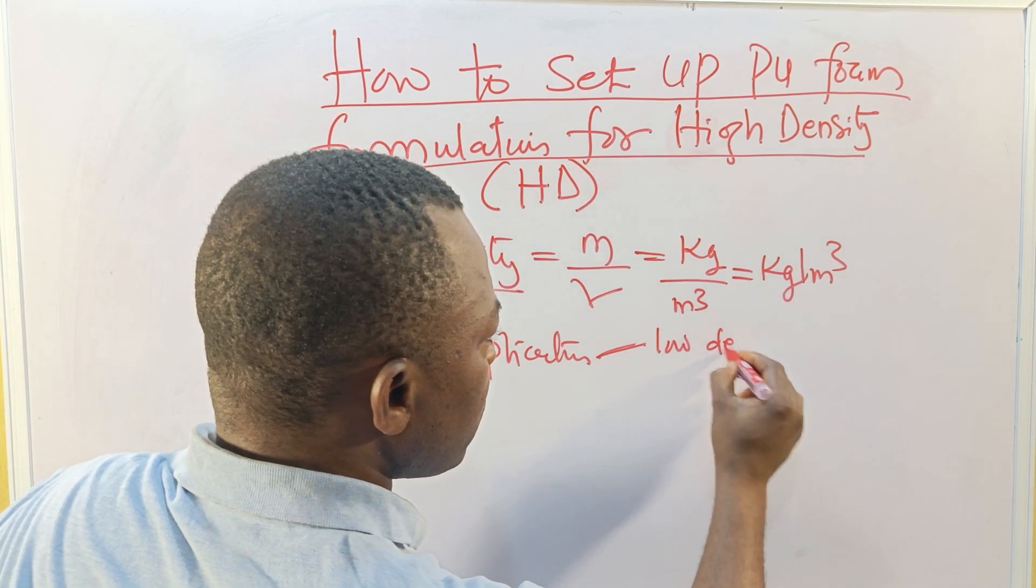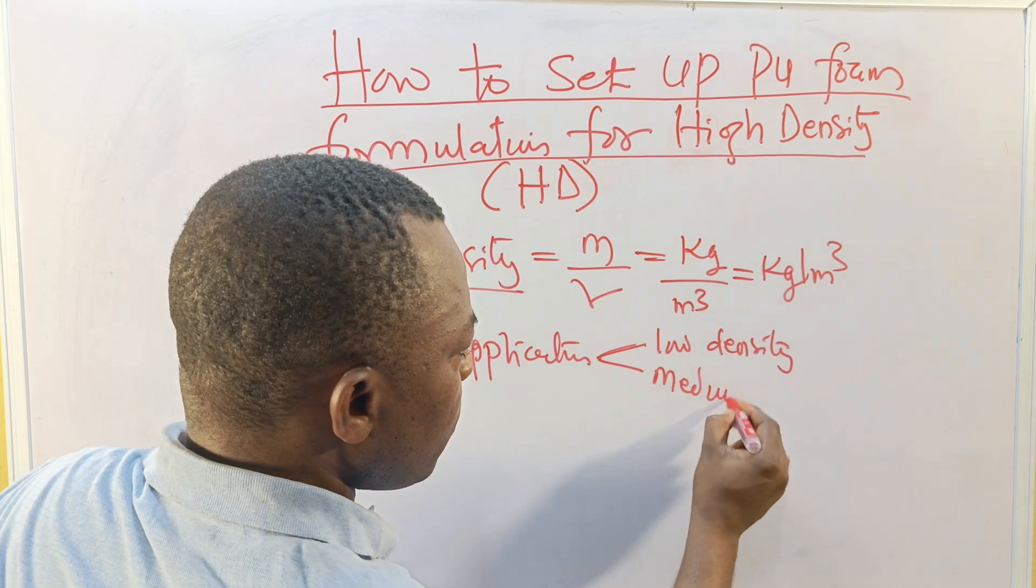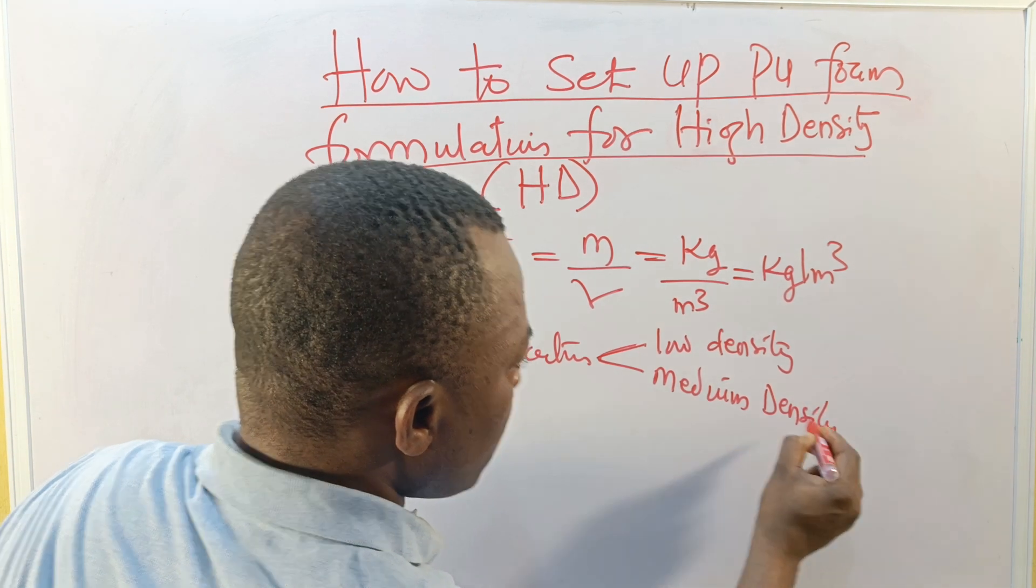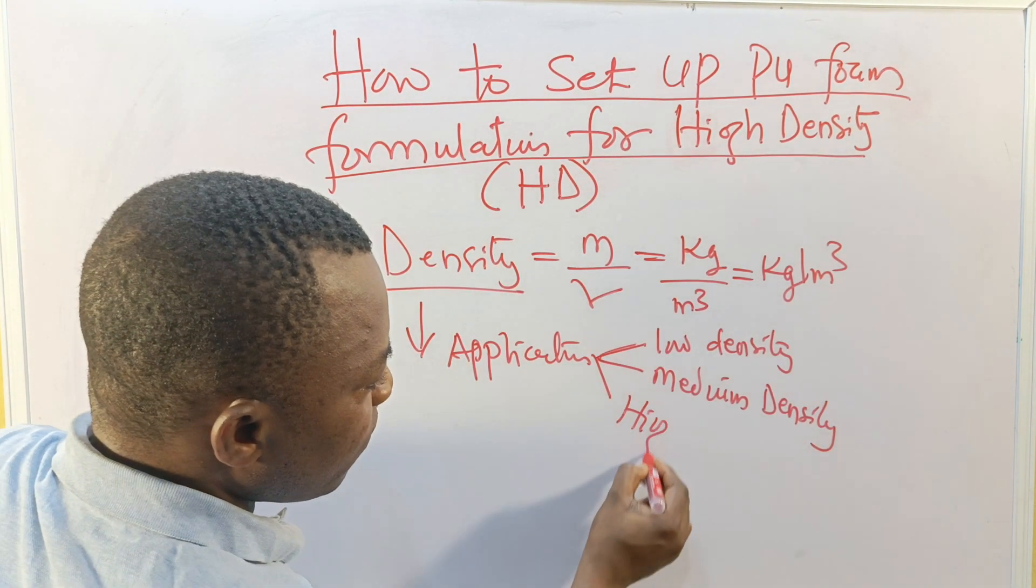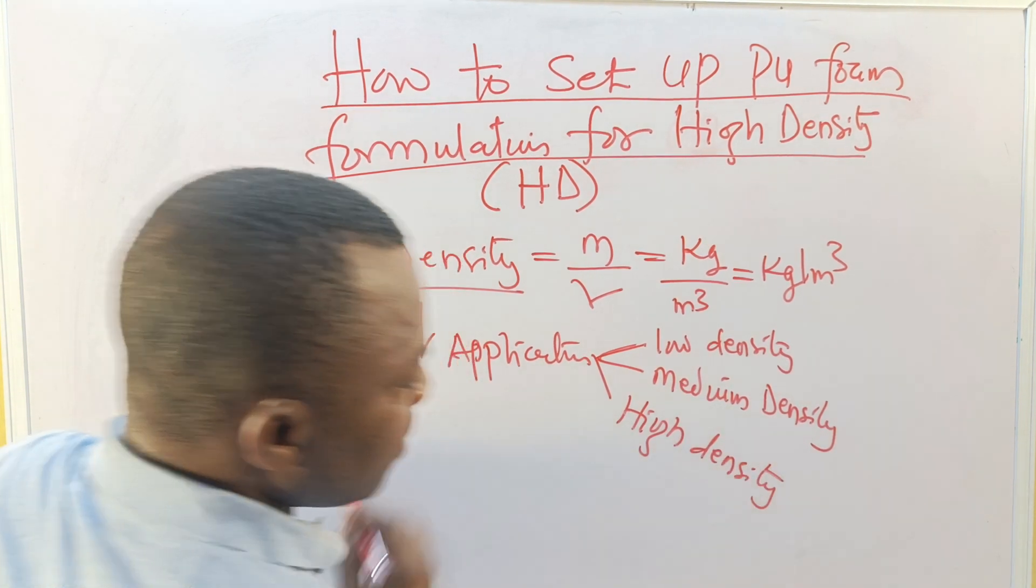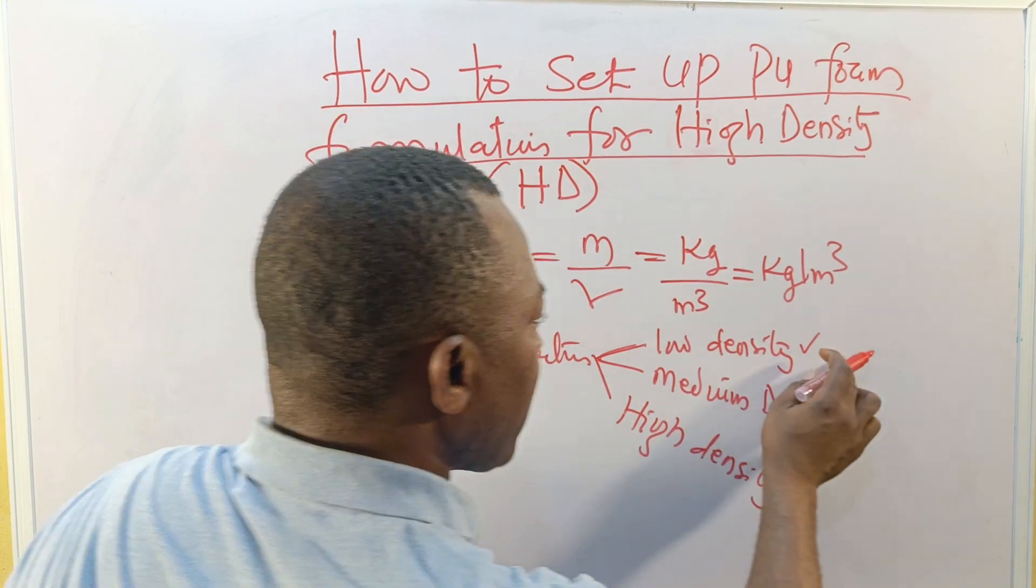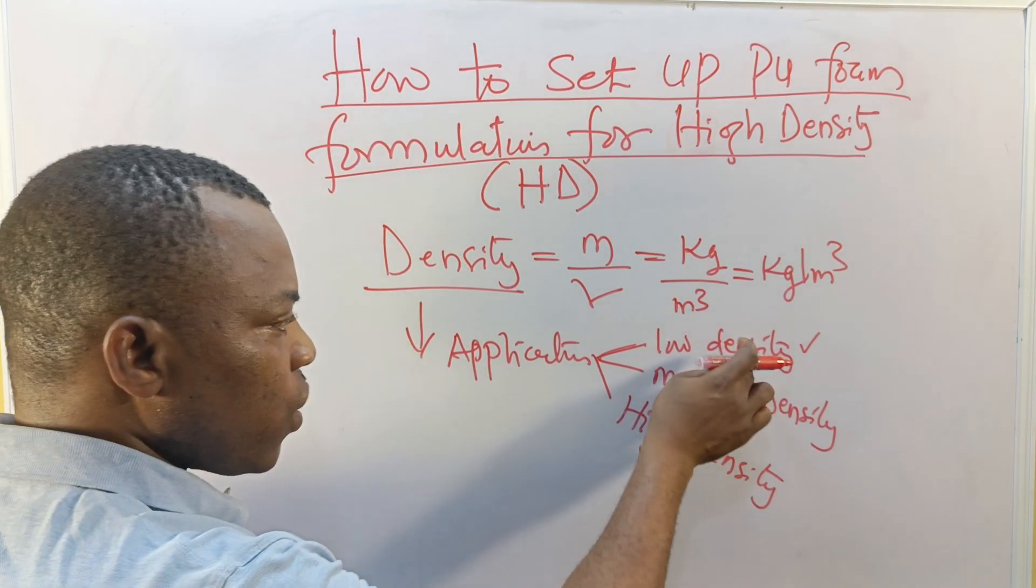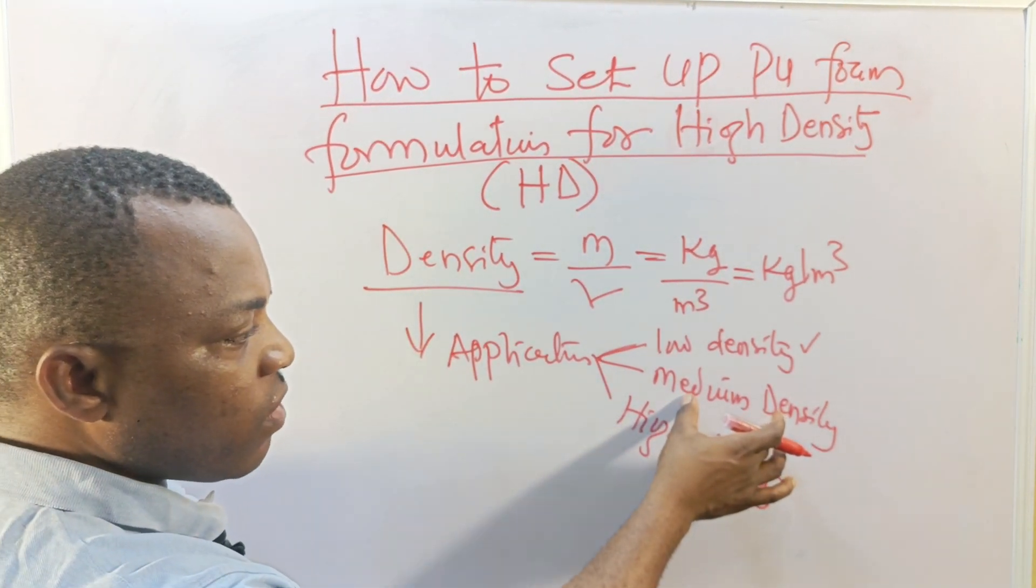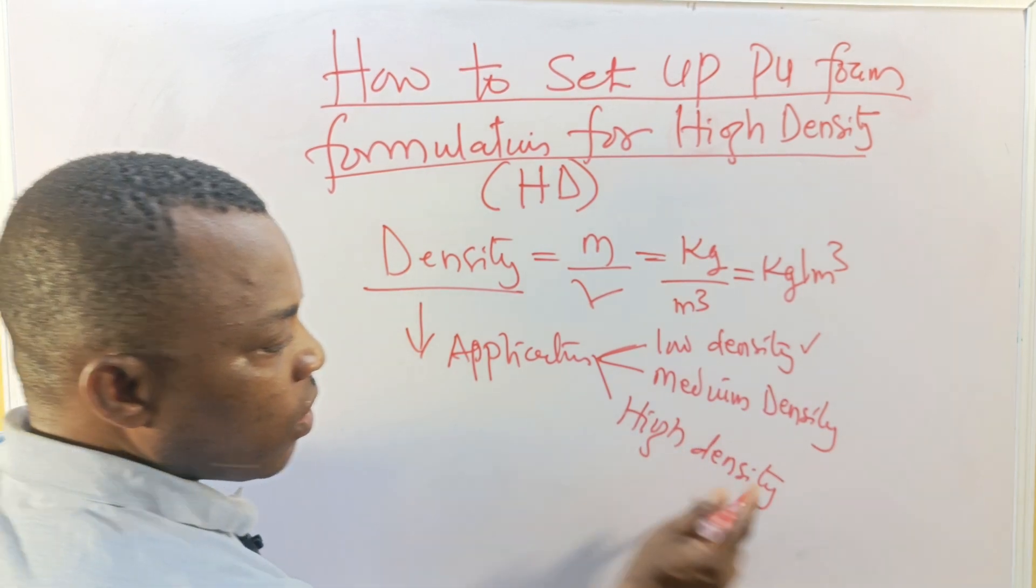This density is produced according to its intended use. By application we have low density, we have medium density, and we have high density. This one basically for packaging and furniture, this one basically for bedding, and this one basically for furniture, that is coaching.